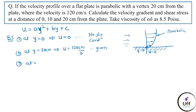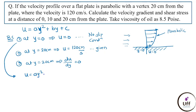Third boundary condition: at y = 20 cm, du/dy = 0. This is because at the top the velocity is maximum, and by the maximum-minimum principle du/dy = 0 at the vertex. Applying the first boundary condition (y = 0, u = 0) into u = ay² + by + c gives c = 0.